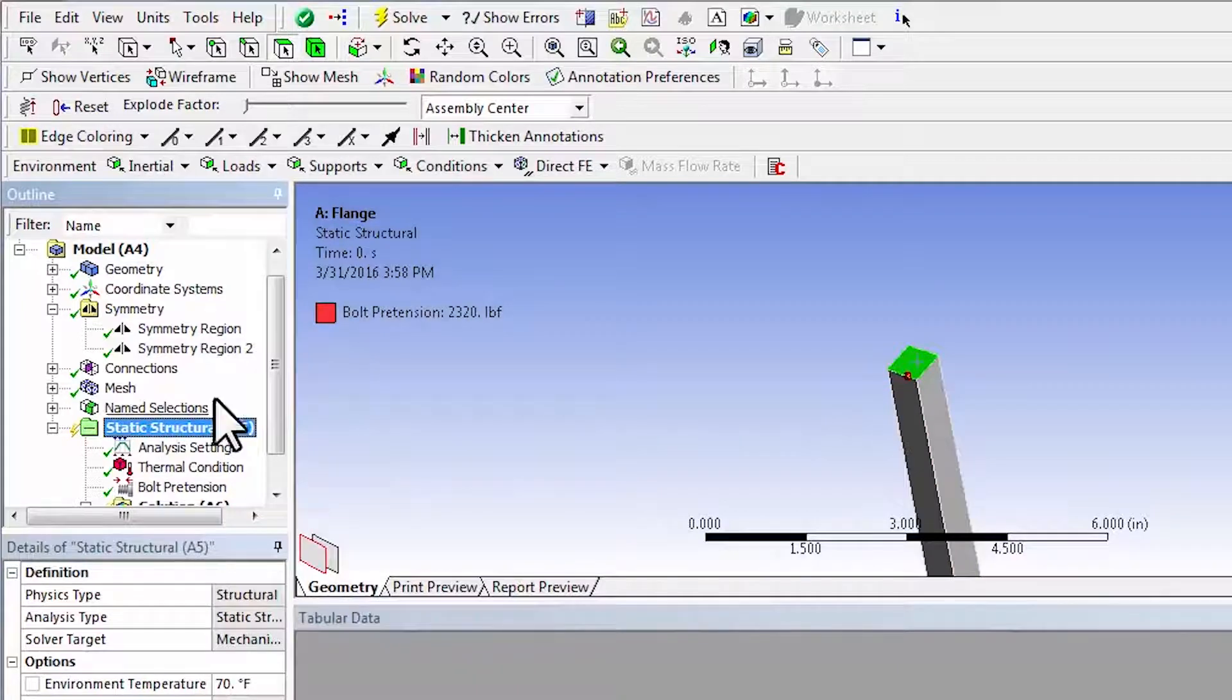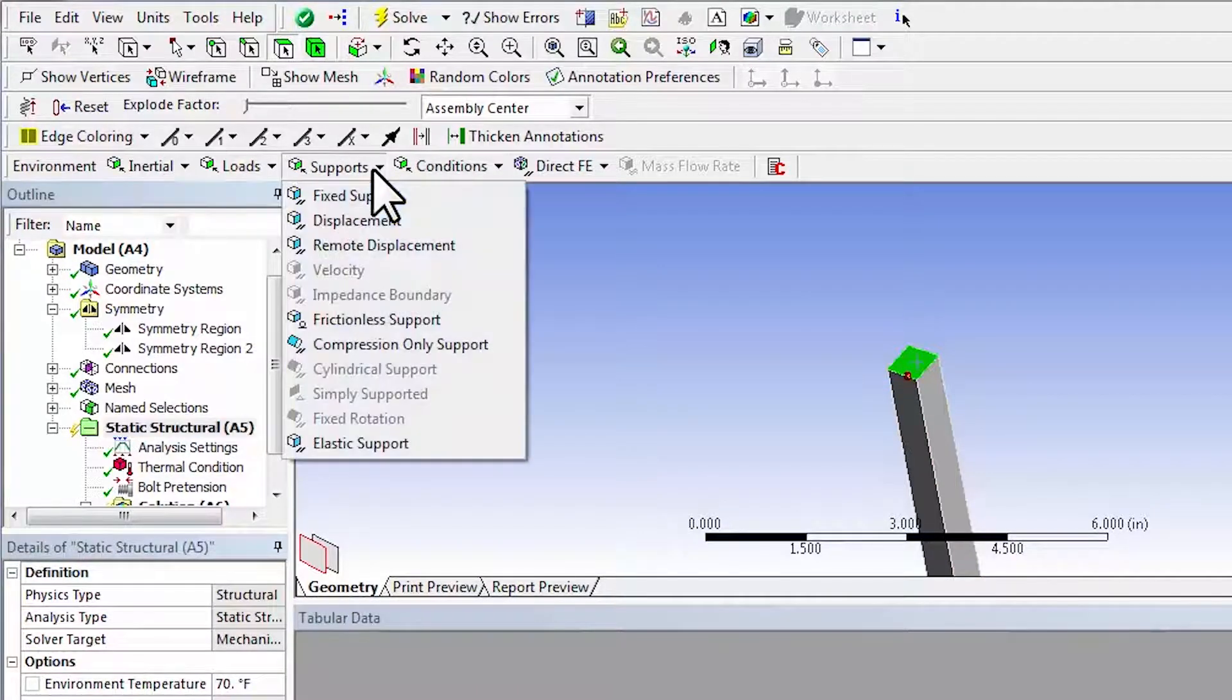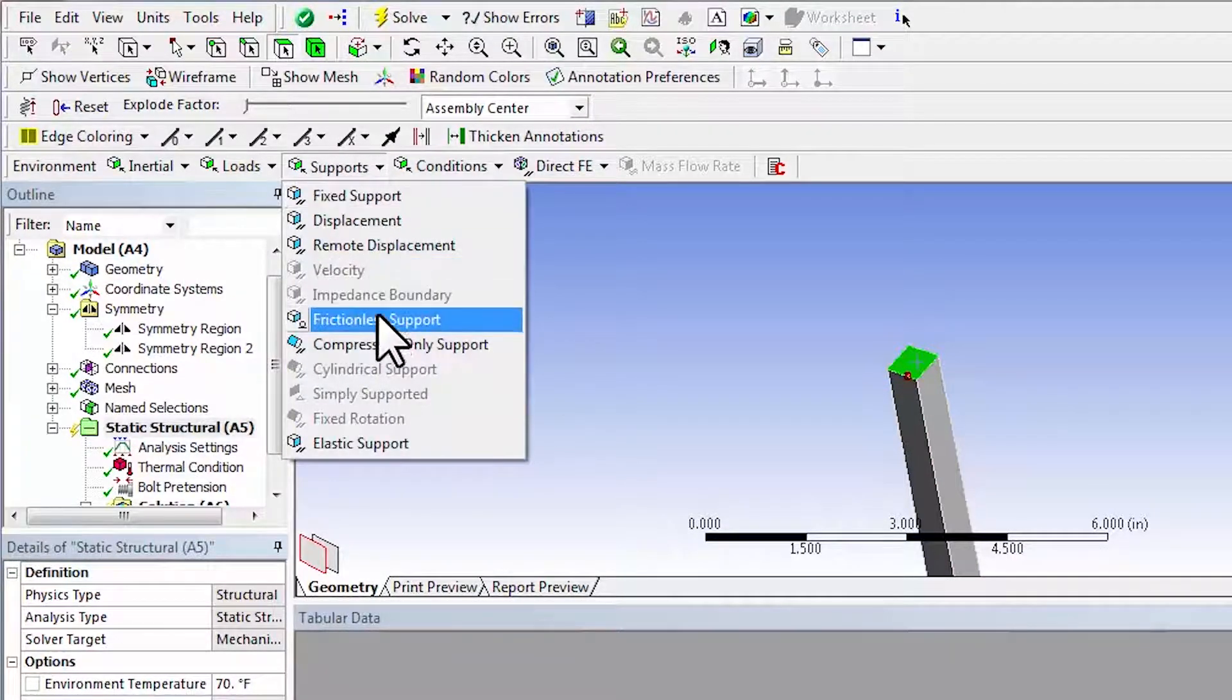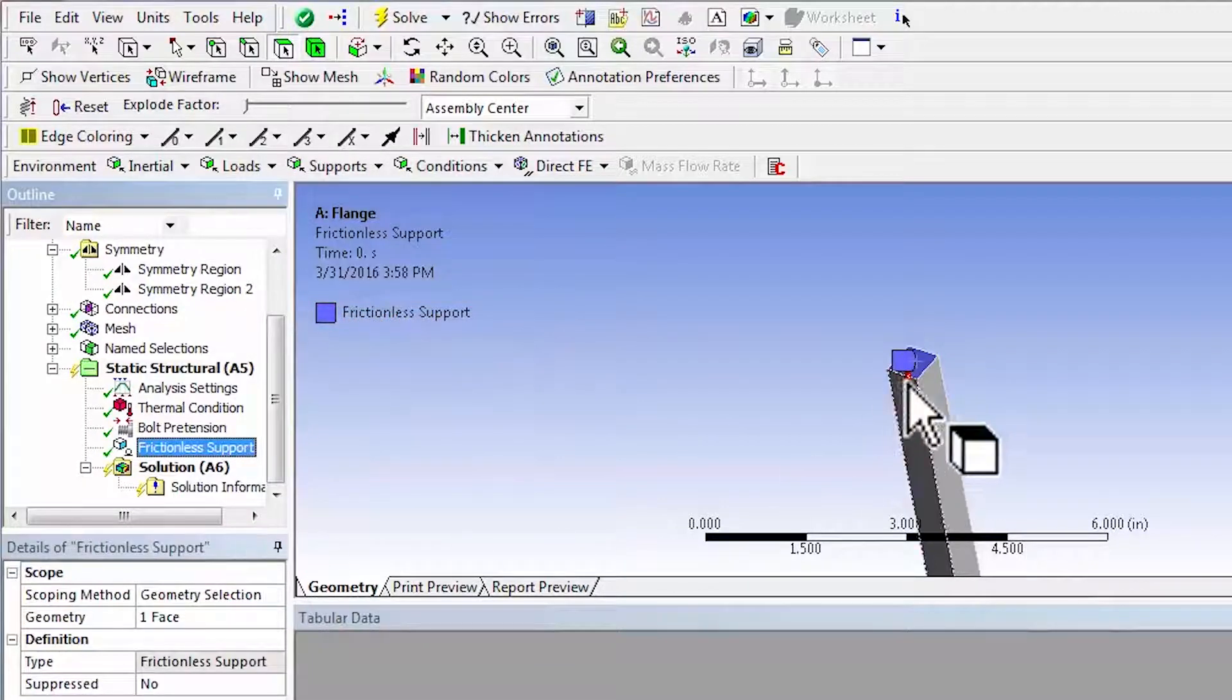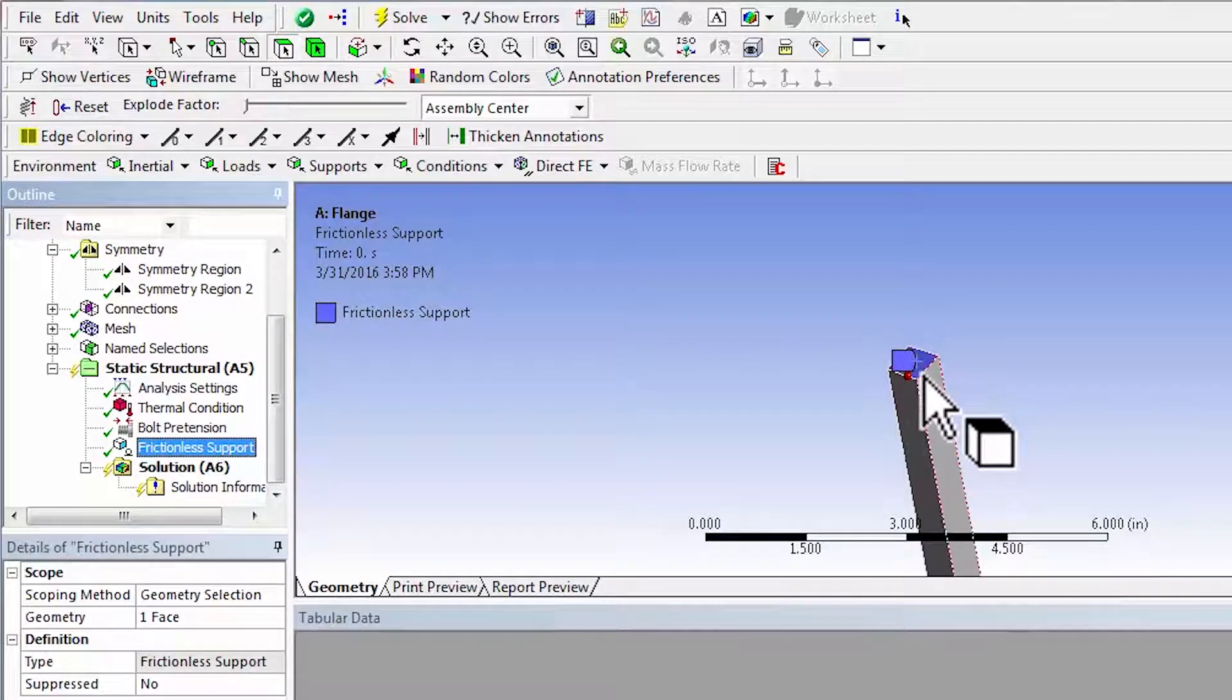And come back to static structural and say supports, frictionless support. And again, that means that the displacements normal to that surface have to be zero, and the tangential traction has to be zero.